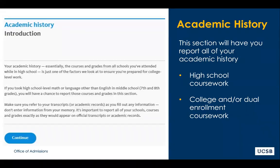The academic history section of the application is your opportunity to demonstrate your successes inside the classroom. Please note that the UCs do not request any transcripts with the application. Therefore, applicants are responsible for self-reporting all of the A-G coursework within this section — the core courses required for all UC campuses. It is recommended that you obtain an unofficial copy of your transcripts before you begin, as it is very important that the courses and grades you enter correspond exactly with what appears on your transcript.